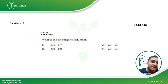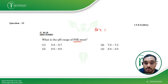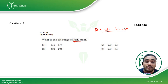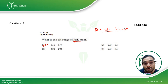Coming to the next question: what is the pH range of PSE meat? As discussed when covering animal products, PSE stands for pale, soft, exudate. This is one of the quality defects of spoiled meat. The pH for PSE meat is 5.5 to 5.7, which is the first option as the answer. You can straight away mark this as the answer.